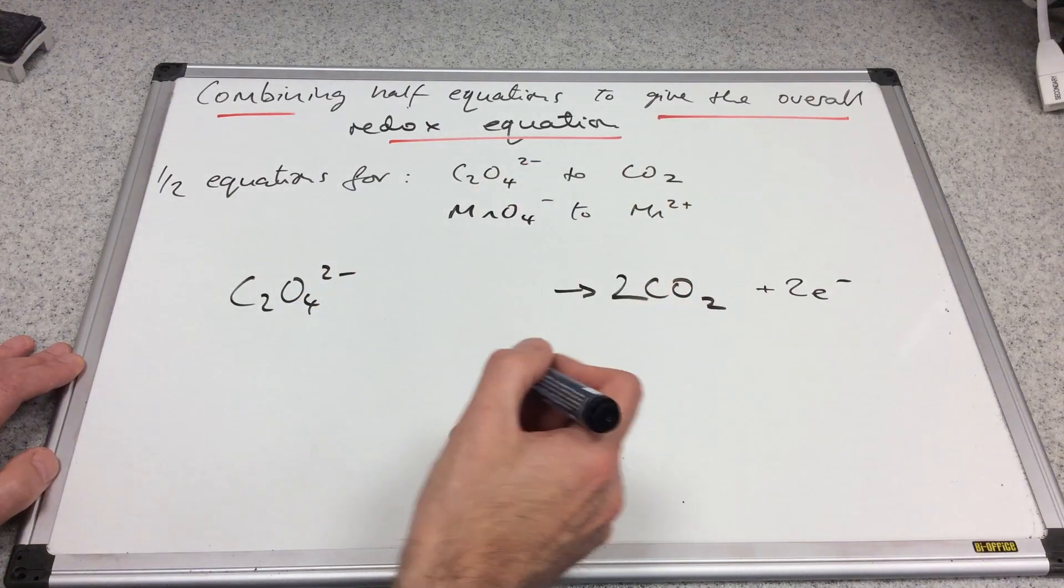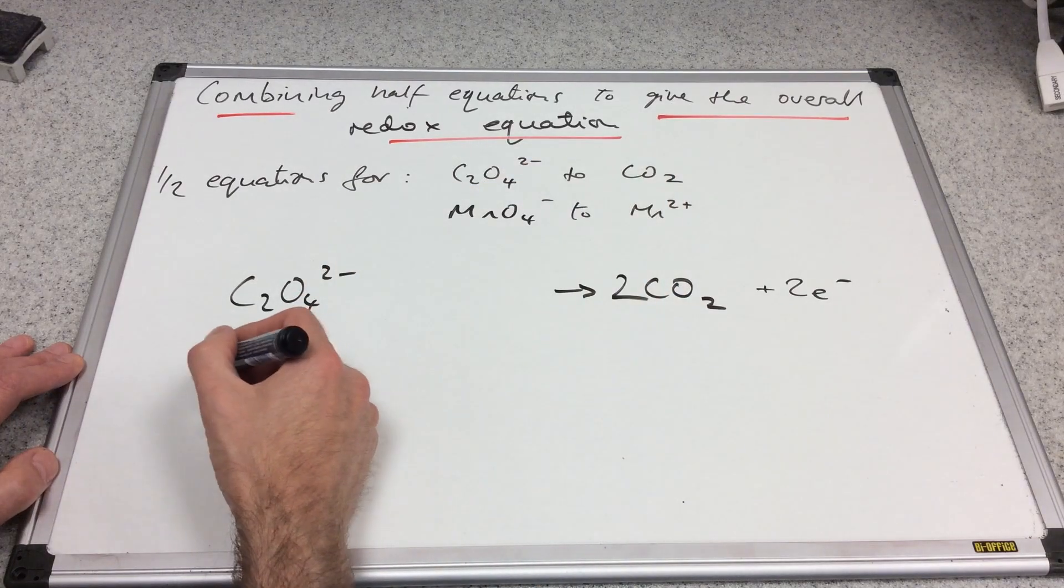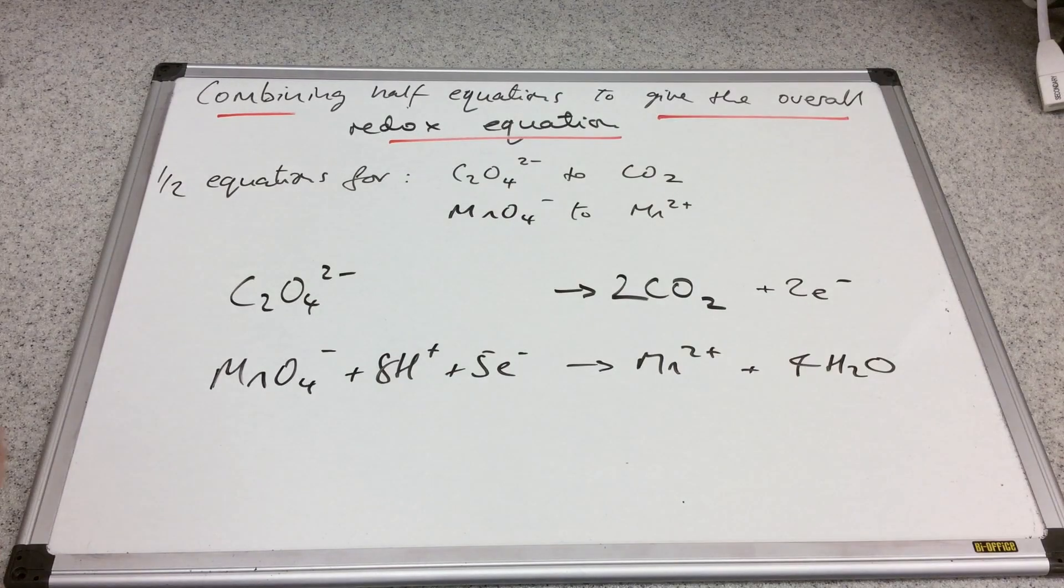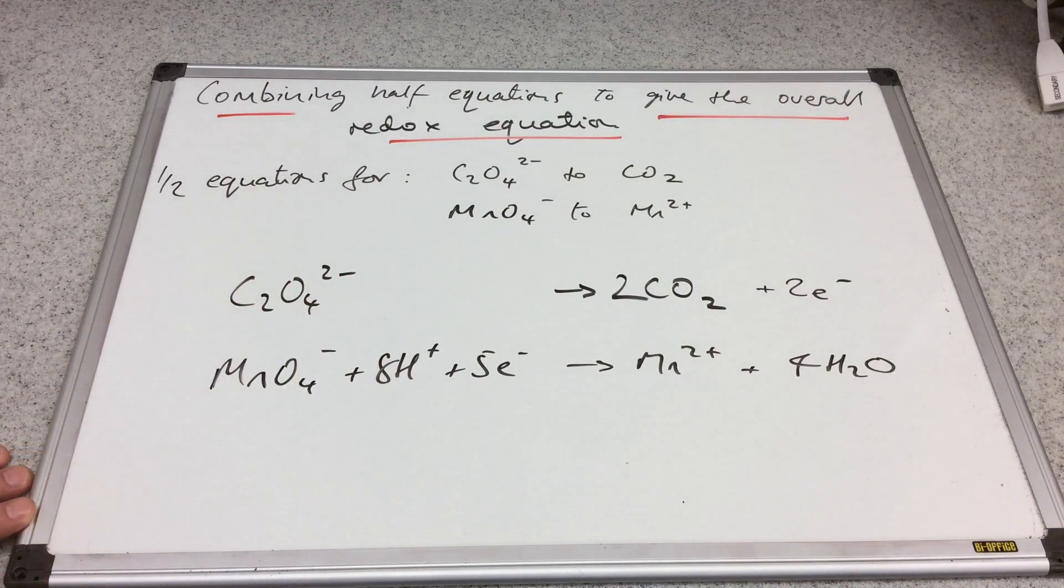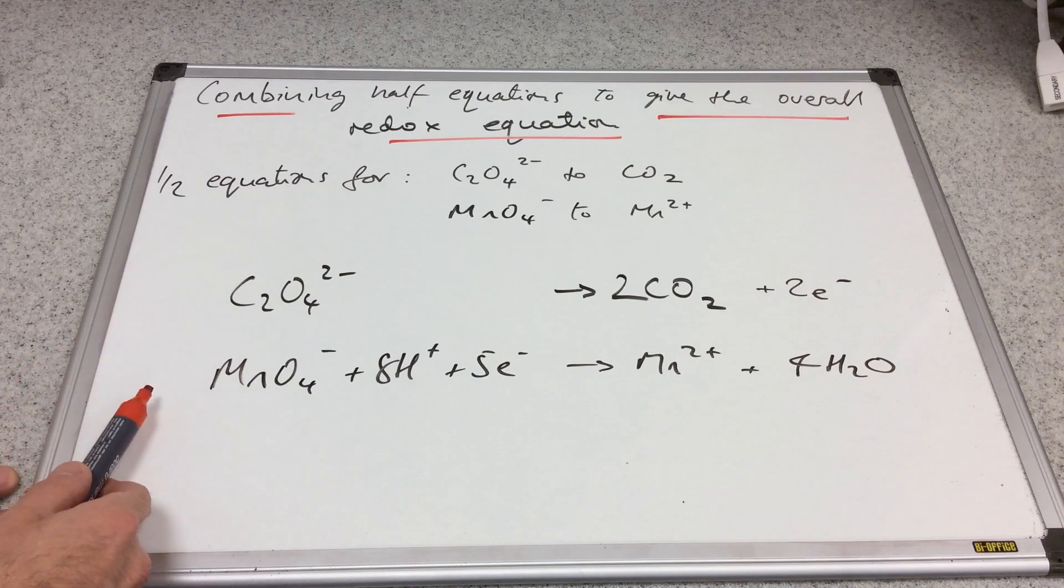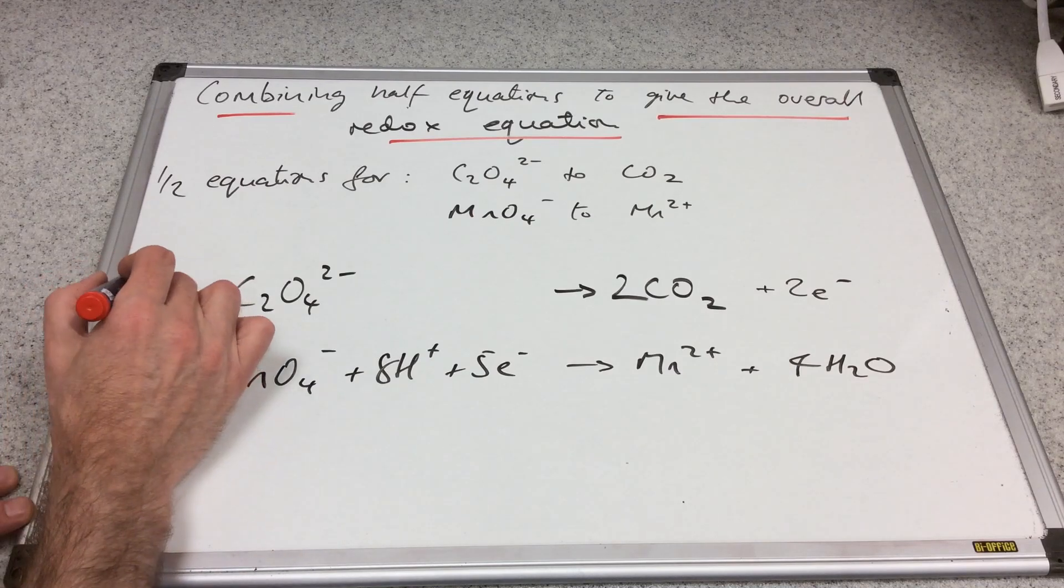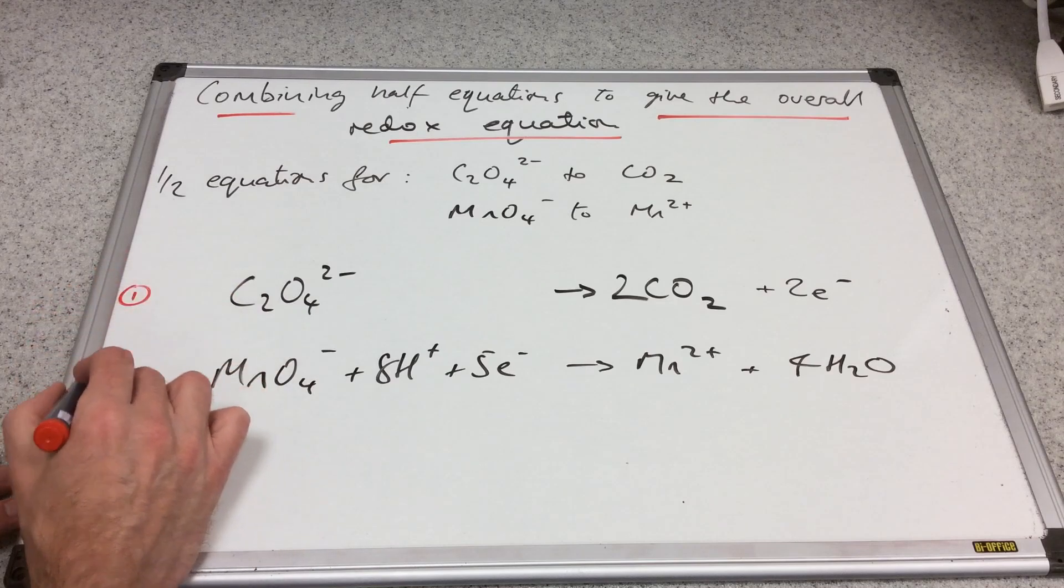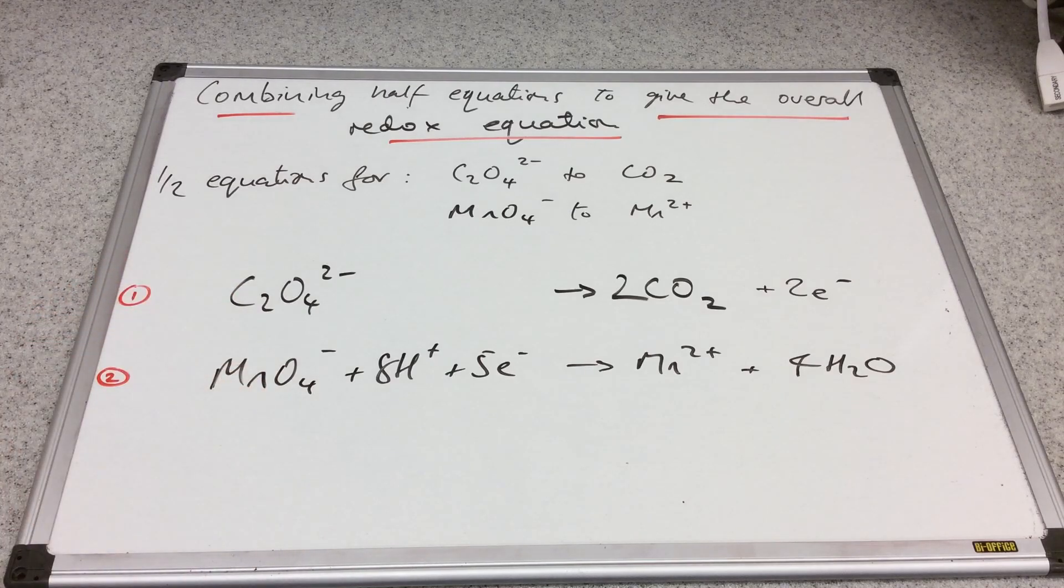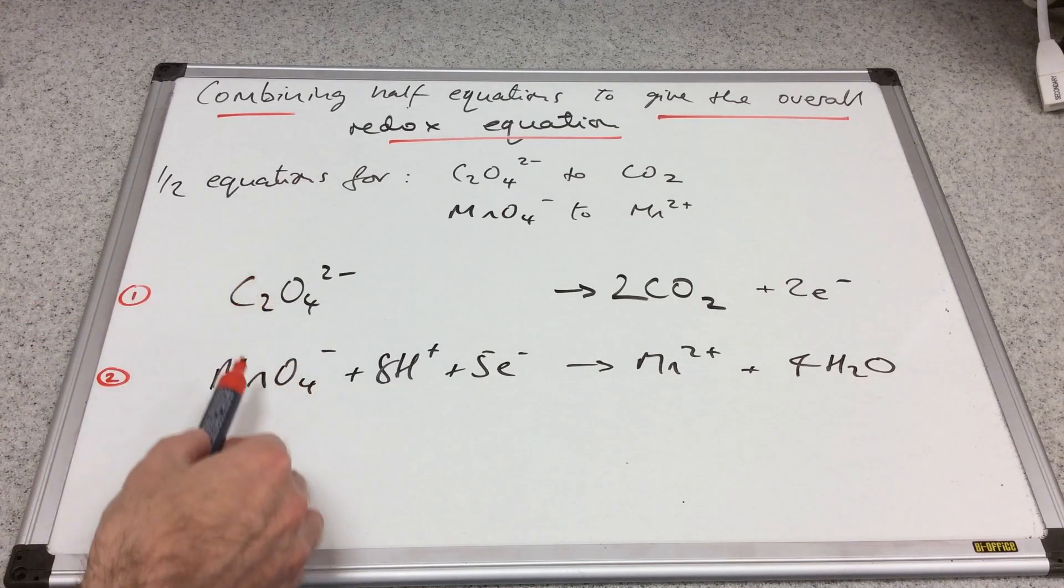We've already seen the MnO4⁻ one, so I'm just going to write that straight up. How do we combine these two half equations to create the overall redox equation? What we have to do is add the two equations together, like simultaneous equations in maths. I'm going to number them - this is number one, and we'll call this one number two.